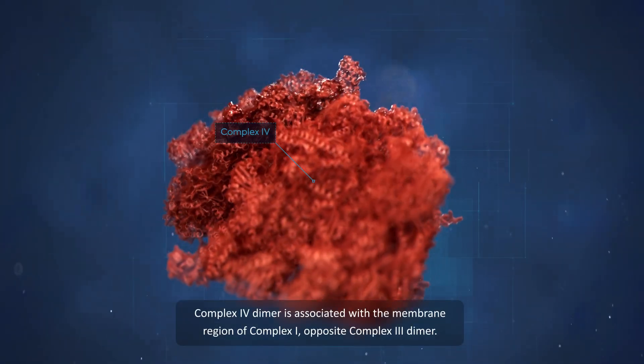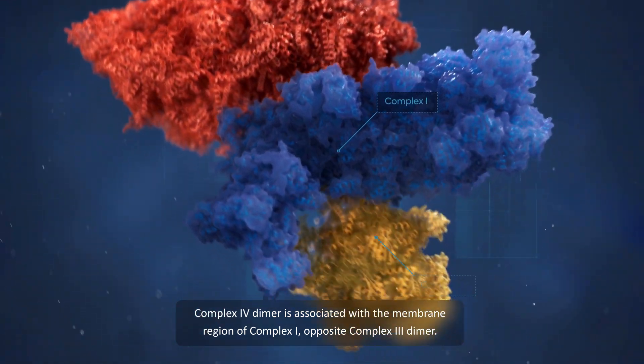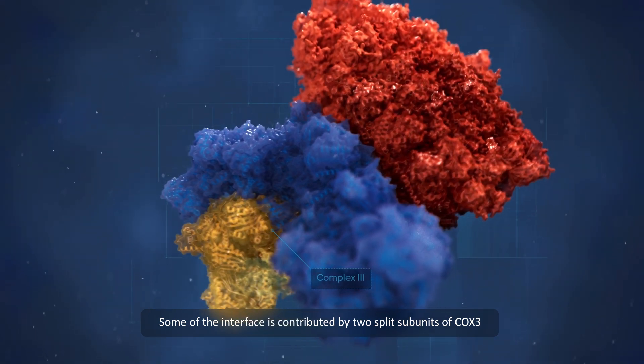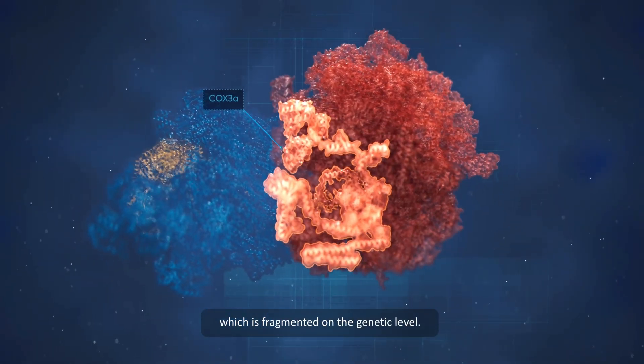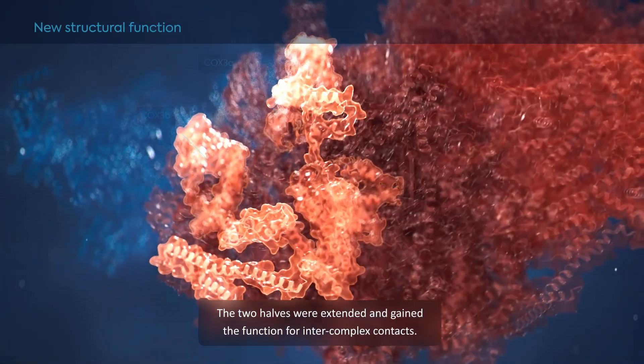Complex 4 dimer is associated with the membrane region of complex 1 opposite complex 3 dimer. Some of the interface is contributed by two split subunits of cox-3, which is fragmented on the genetic level. The two halves were extended and gained the function for intercomplex contacts.